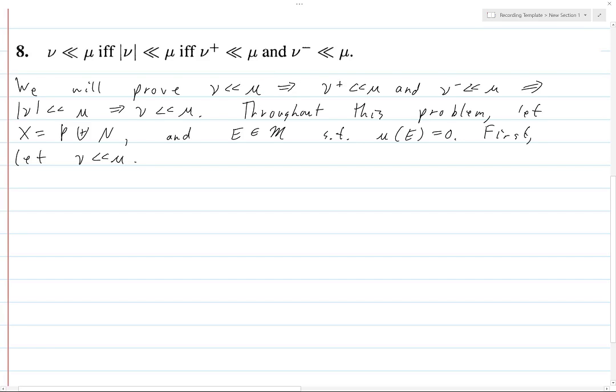Then, given E as above, μ of E is equal to zero. So, ν of E is equal to zero. So, ν⁺ of E is equal to, by the definition, ν of the intersection of E with P. And this is less than or equal to ν of E, since this is a positive measure and this is a subset of this. And this is, well, equal to zero.